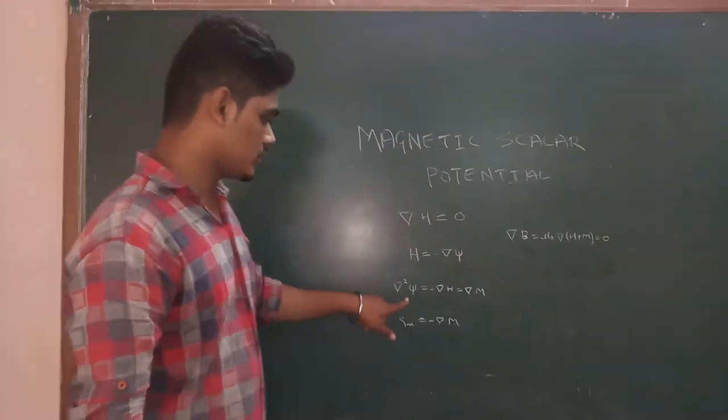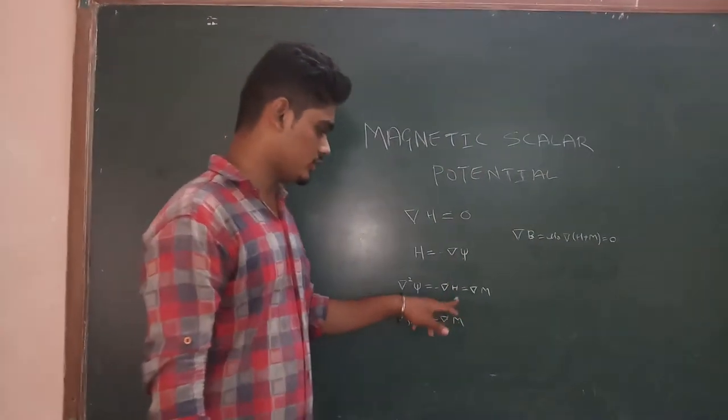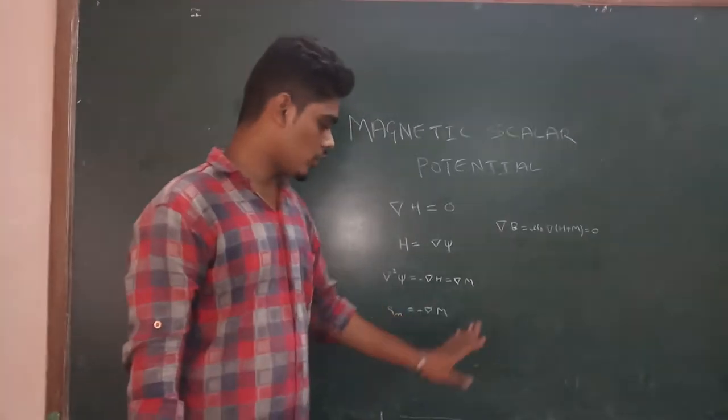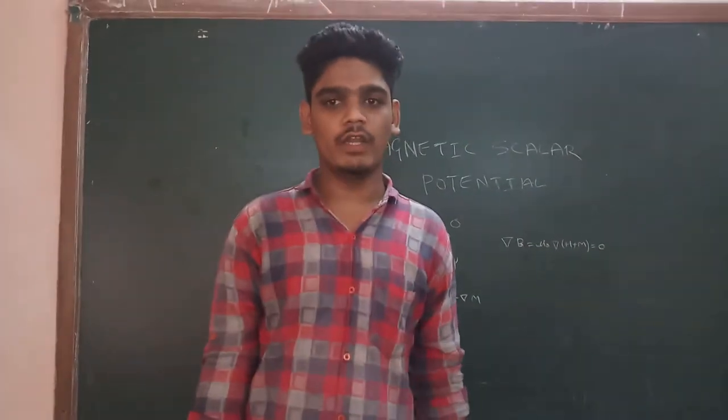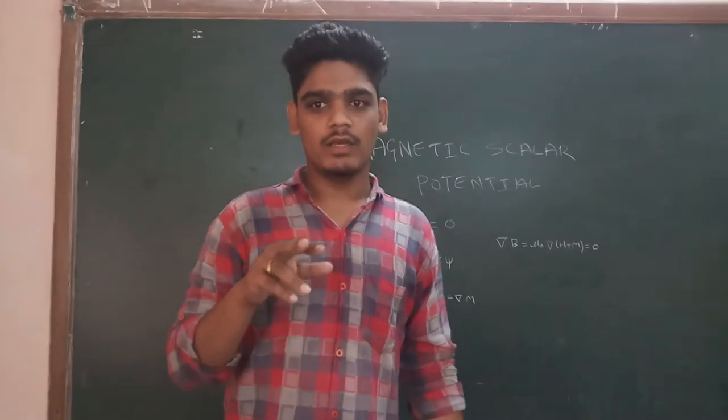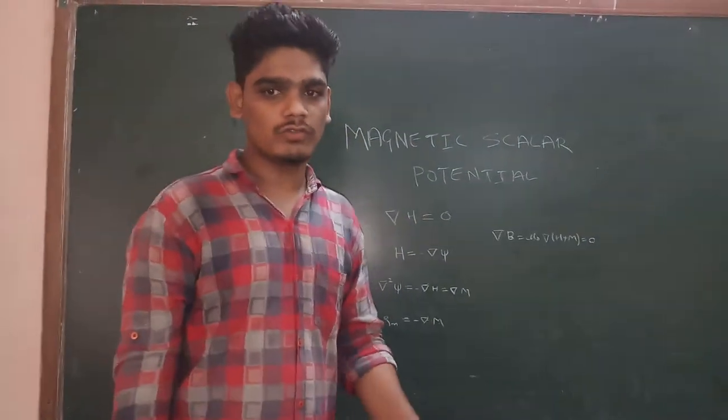So ∇²ψ = -∇·H = ∇·M. Hence ∇·M acts as the source for the magnetic field, much like ∇ρ(x) as the source for the electric field.